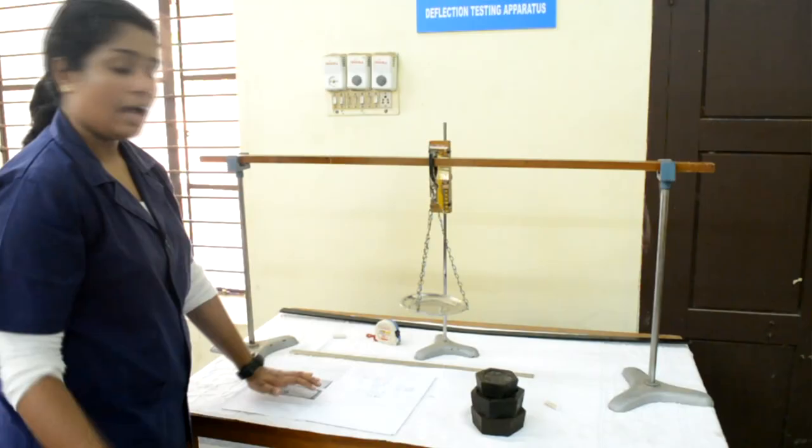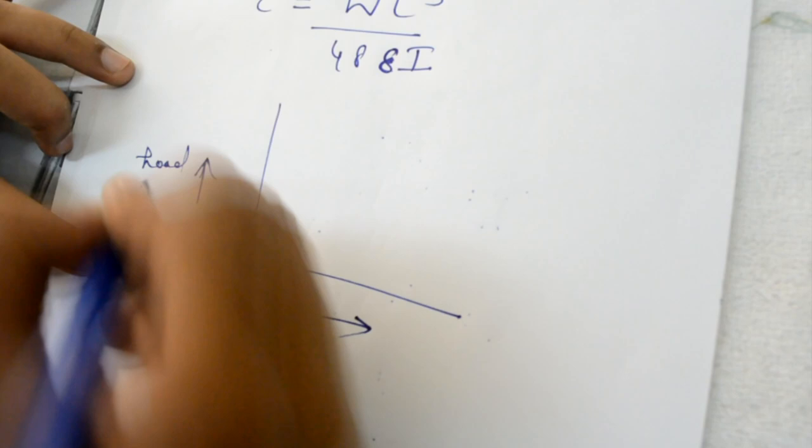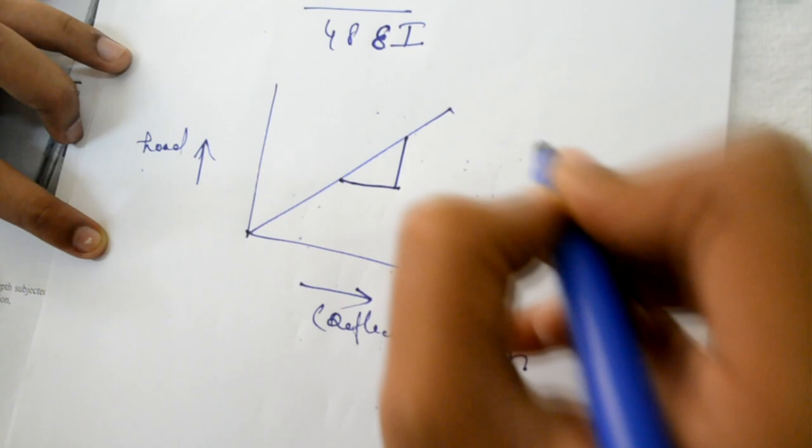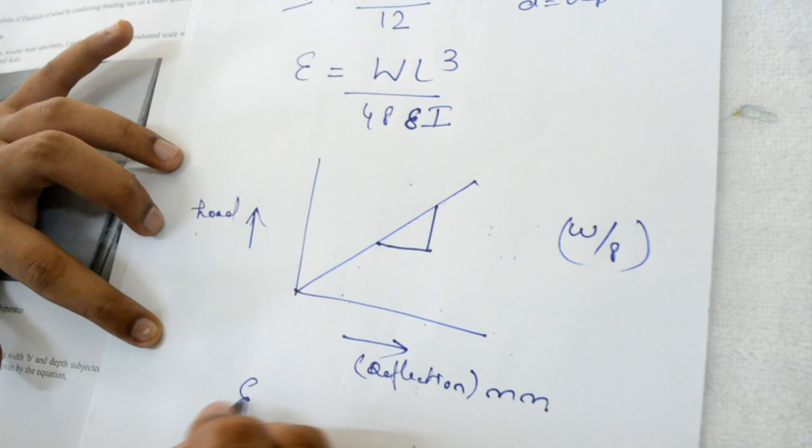After getting these values, we can plot a graph between load and deflection. It will be a straight line graph. The slope of the graph will give us the value for W by delta. So we can substitute this in the equation and get the modulus of elasticity.